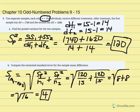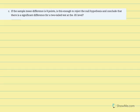Part C asks us to calculate our t-statistic and draw conclusions regarding the null. If the sample mean difference is equal to 8 points, is this enough to reject the null hypothesis and conclude there's a significant difference for a two-tailed test at the 0.05 level? We're conducting a t-test for independent sample means — two different samples exposed to two different treatments — to determine if the difference is due to treatment and not simply sampling error or chance.